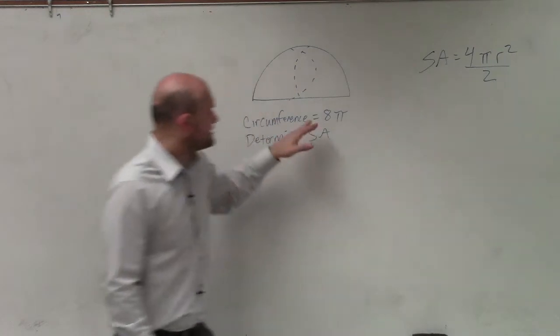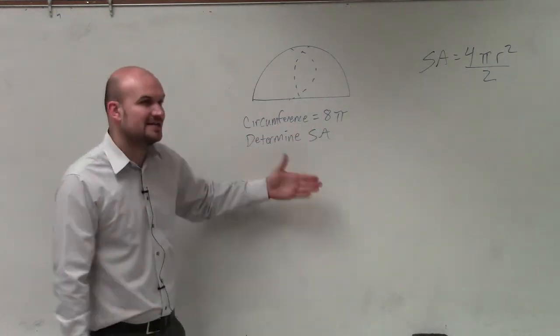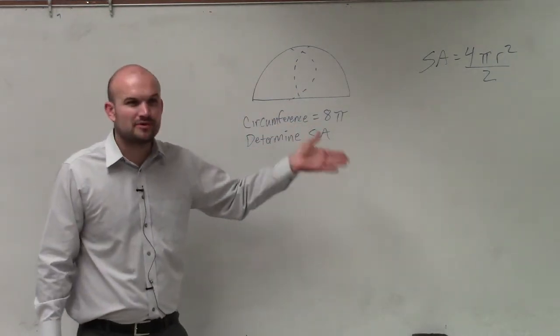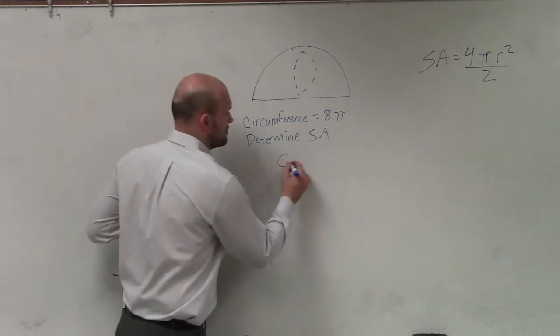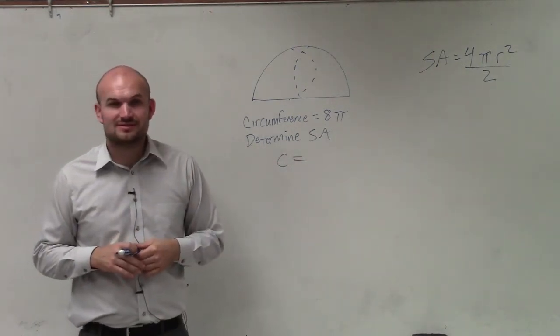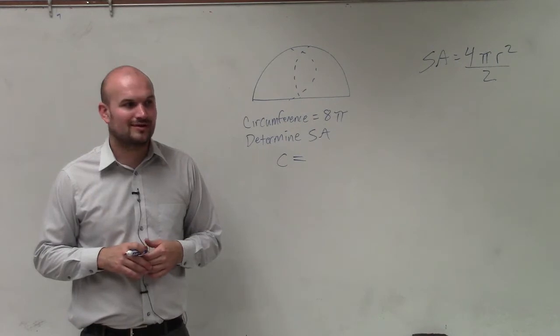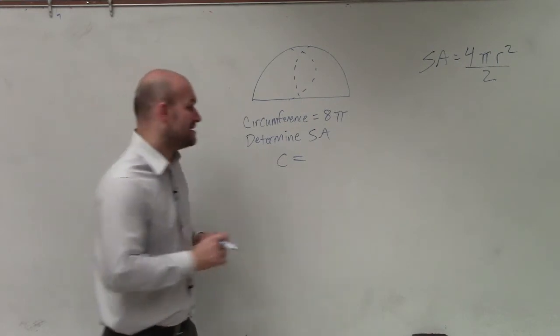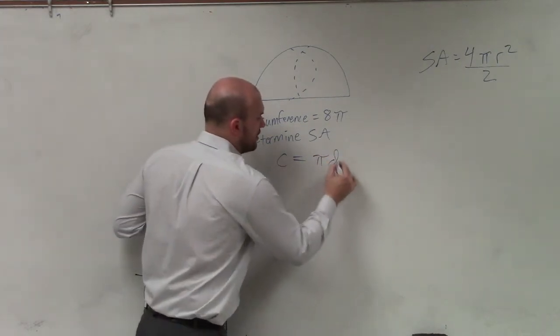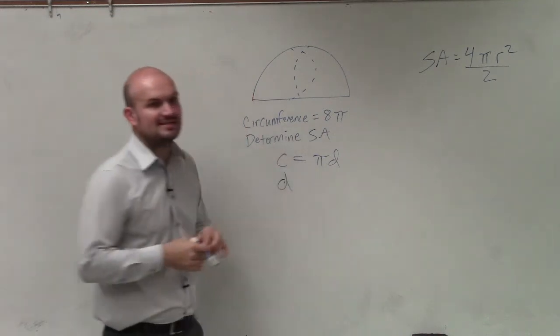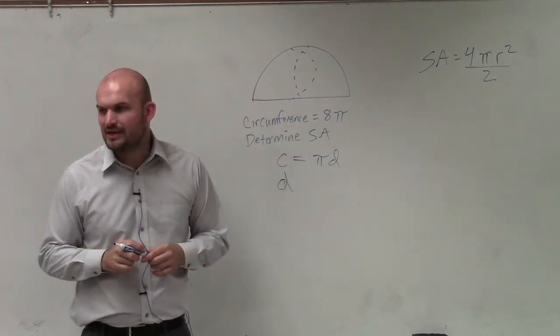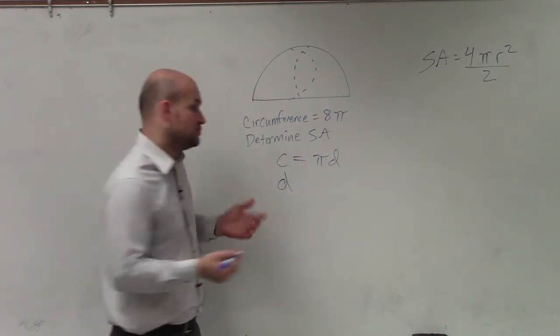So now, since I know the circumference is 8π, I need to figure out what r is. Does anybody remember the formula for circumference? Or a formula for circumference? π times diameter, correct. What can we rewrite as diameter? What is the diameter related to a radius? 2r.